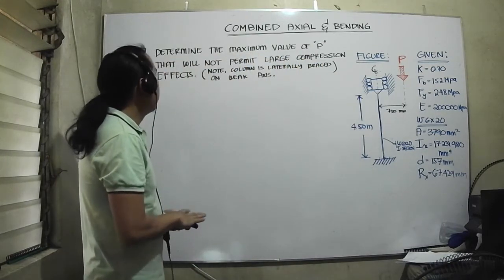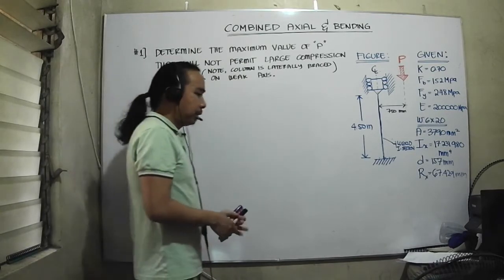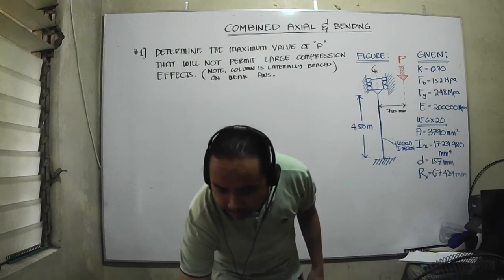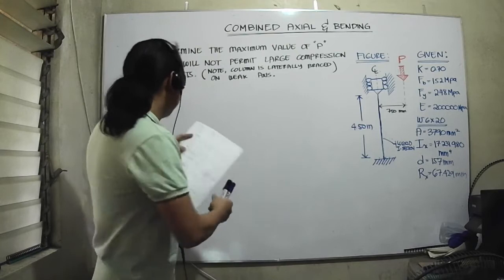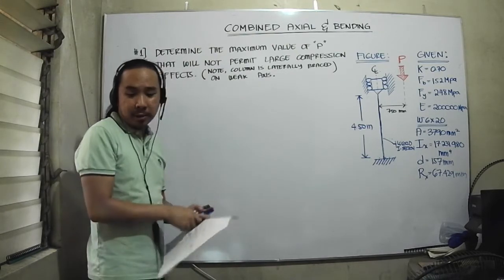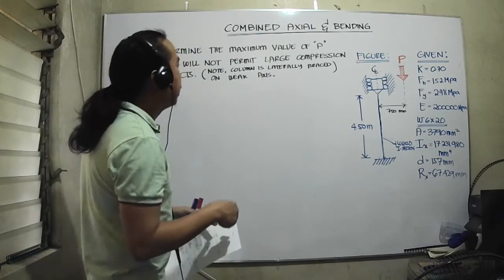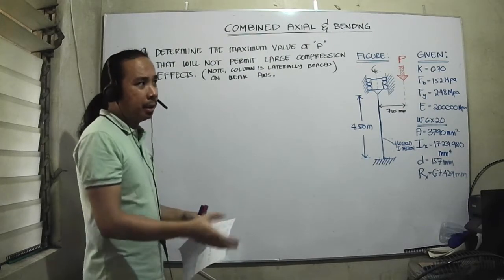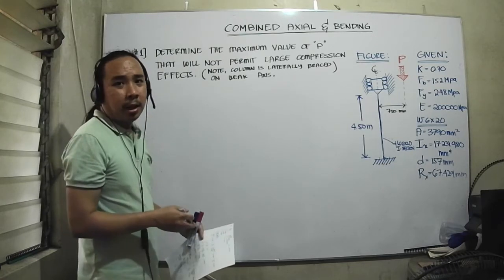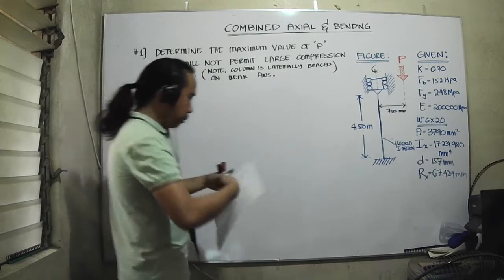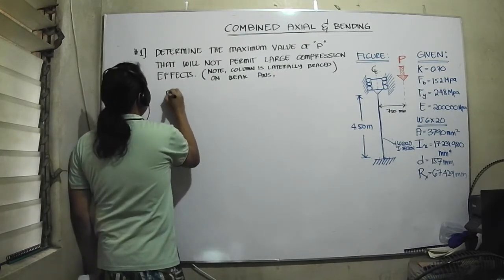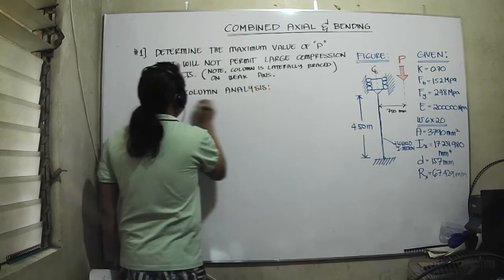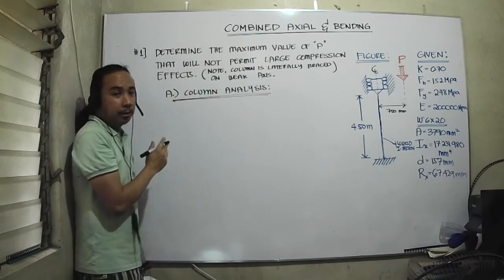We need to check the maximum value of P that will not permit large compression effects. The approach will be: first, column analysis; then bending; then the actual interaction criterion. For the column analysis, we need to determine whether this is a short column or a long column. First, we need to solve for the compression index Cc.